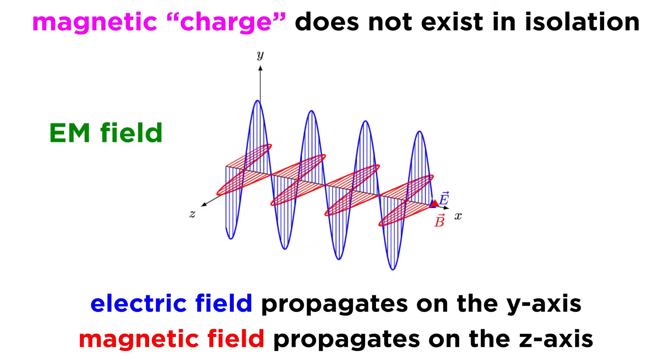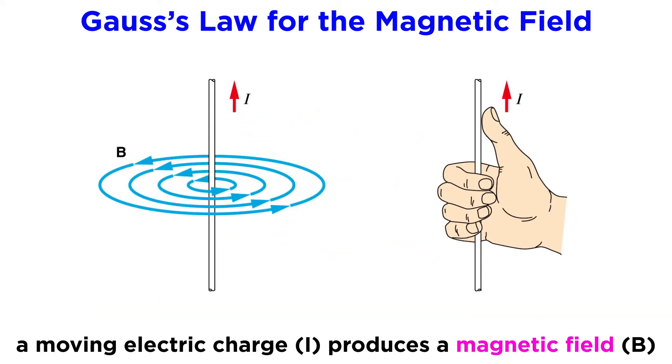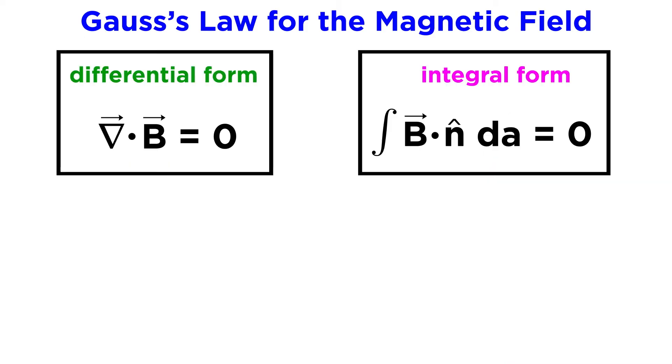We were already aware of this relationship conceptually, so now let's look at the math. This magnetic half of Gauss's law arises from the idea that a moving electric charge produces a magnetic field. Just like the first equation, there are two forms of this equation, a differential form and an integral form.